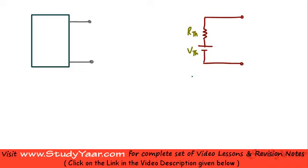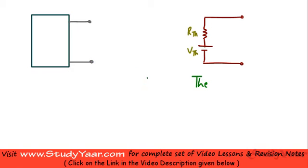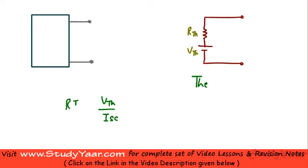Let's revisit Thevenin's equivalent circuit. If we have a network, that network is equivalent to Vth, which is your open circuit voltage across these two terminals, in series with Rth. Rth is given by Vth upon your short circuit current — the current which flows through these two terminals when they are short circuited — so Vth upon Isc is your Rth.